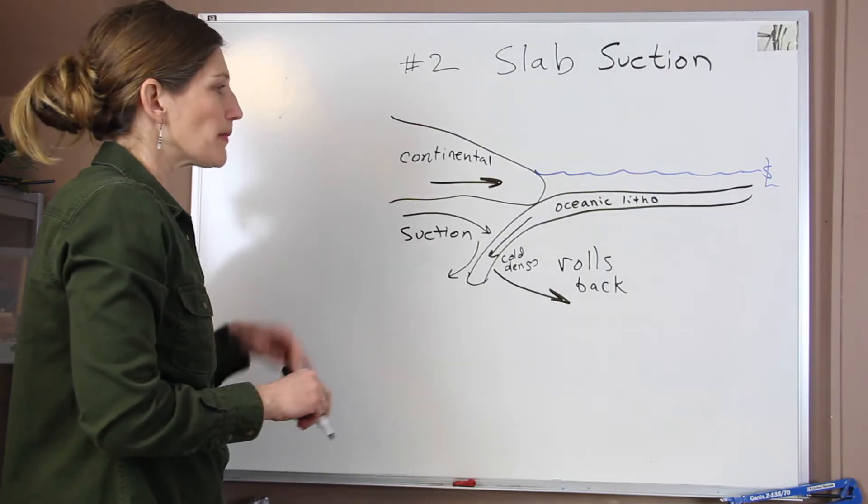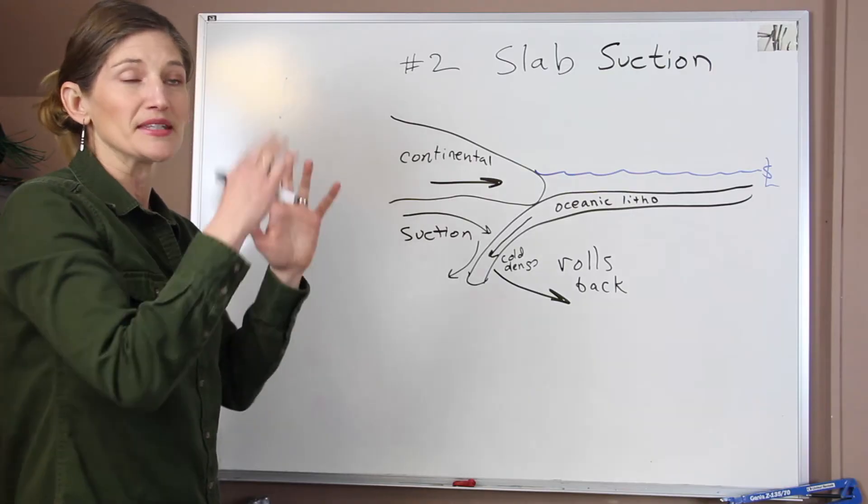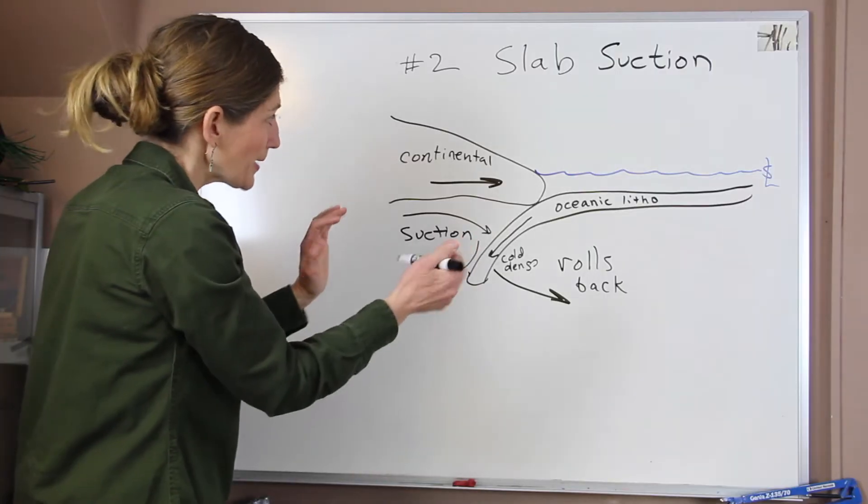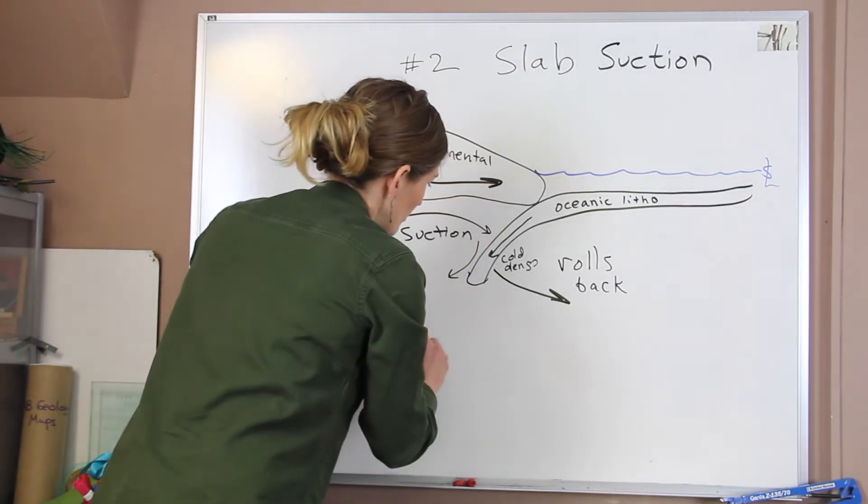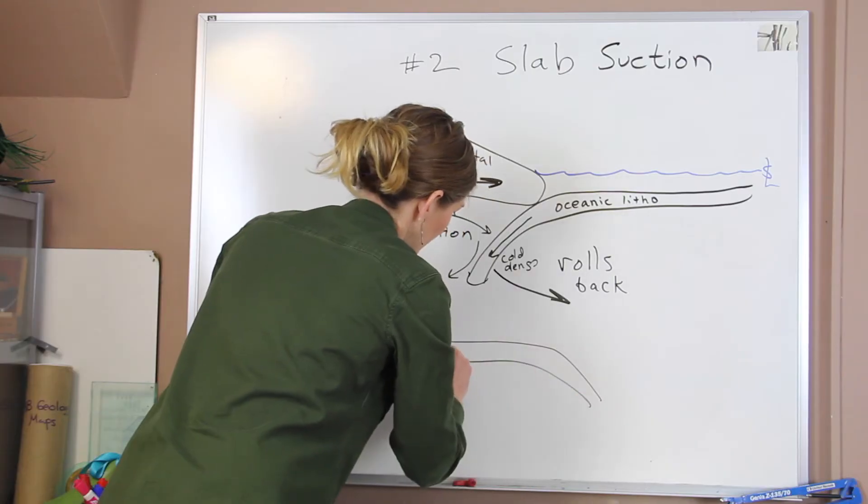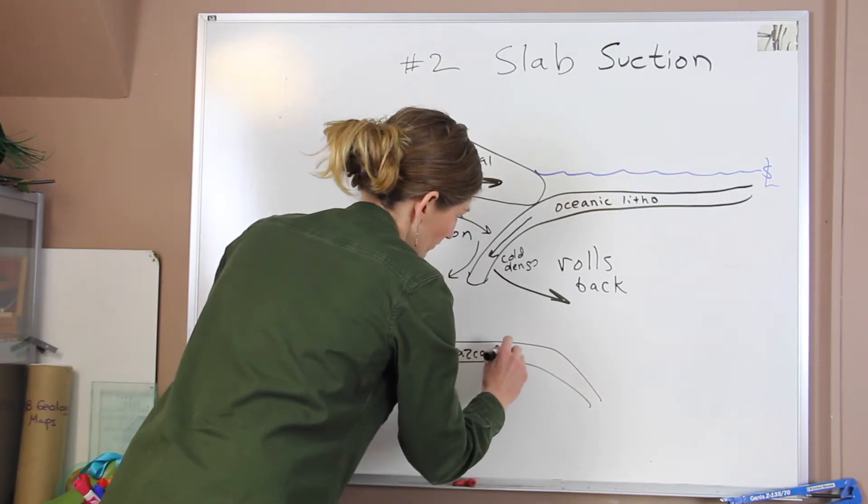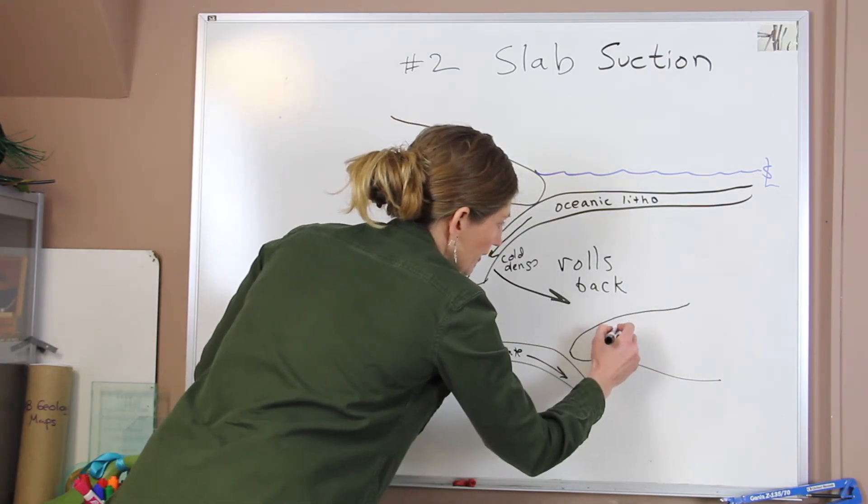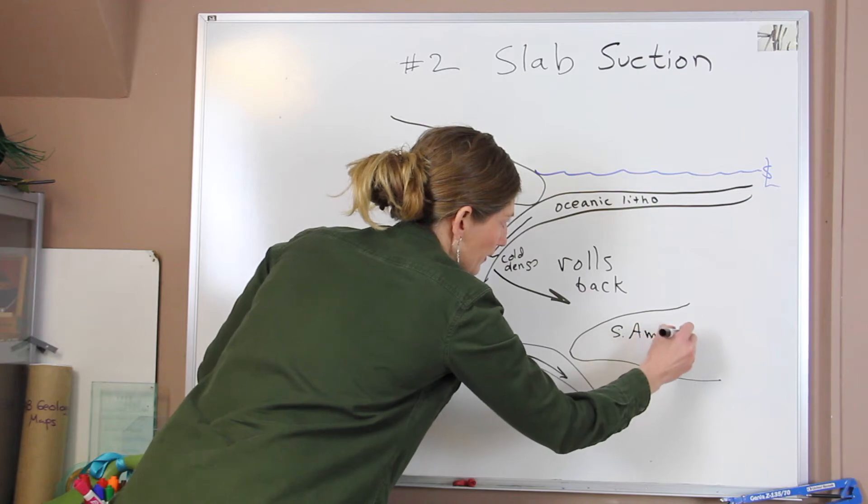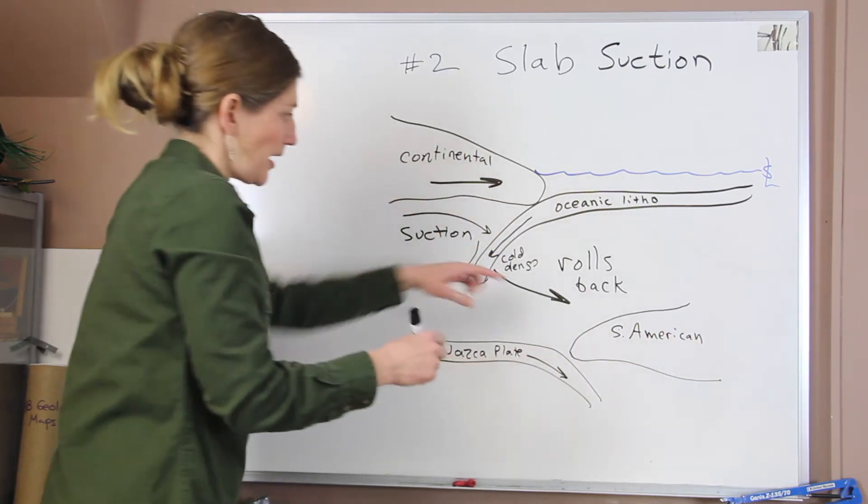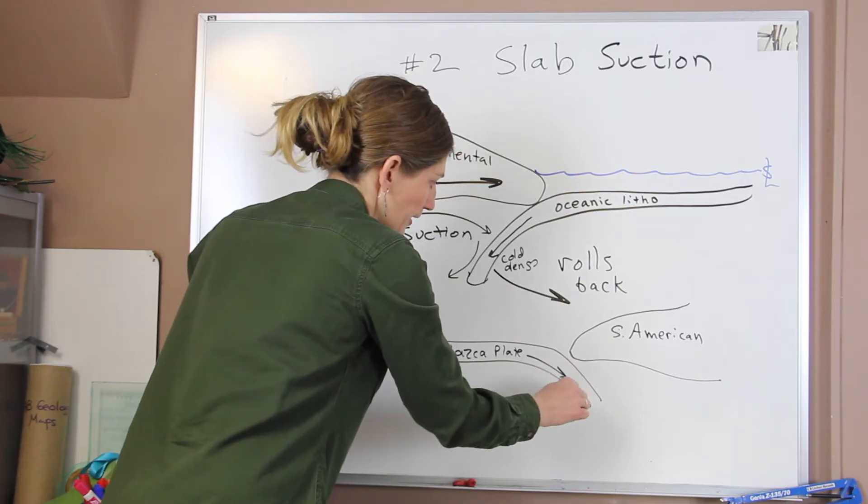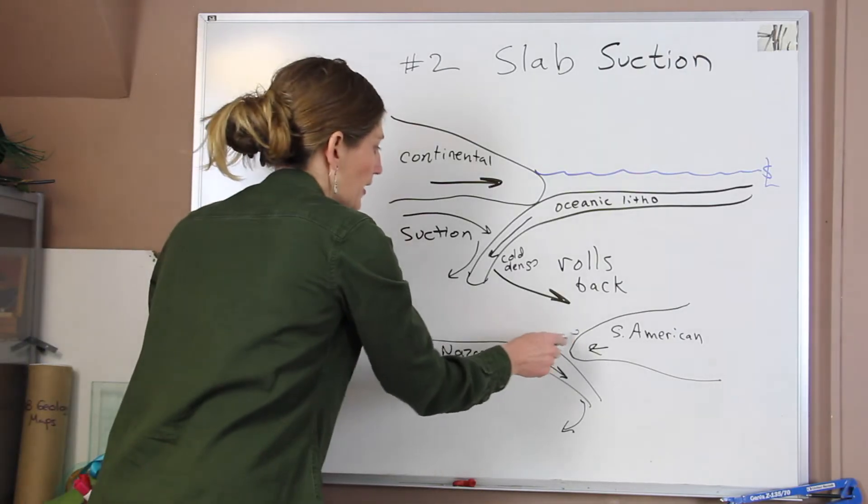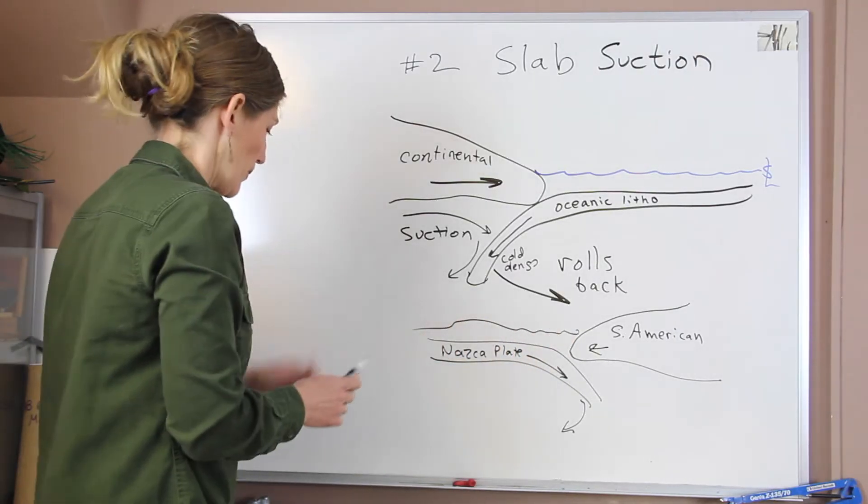Now an example that we might see that is if we go and we look at the Pacific Ocean, where we have the Nazca plate, we would need to turn this whole picture around. So we have the Nazca plate and it's descending. And we have the South American plate. And it is the overriding plate. So as the Nazca plate goes down and it rolls back, it's pulling the South American plate towards it or to the west. So that would be an example where we could see slab suction.